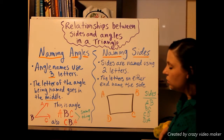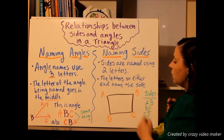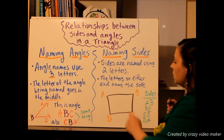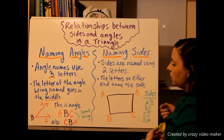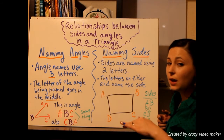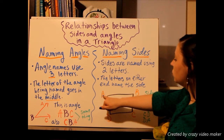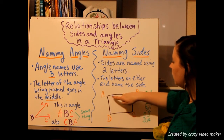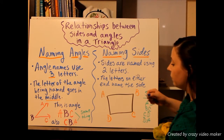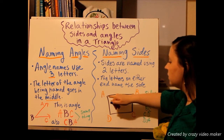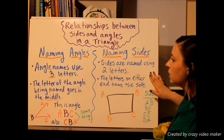You could also name them the other way around. For example, side AB could also be named BA, or DA could also be named AD. It doesn't matter the order of the letters, just as long as you have the two letters that are referring to that side — the letters that are on the corners the side goes between. That's how we name angles and sides.